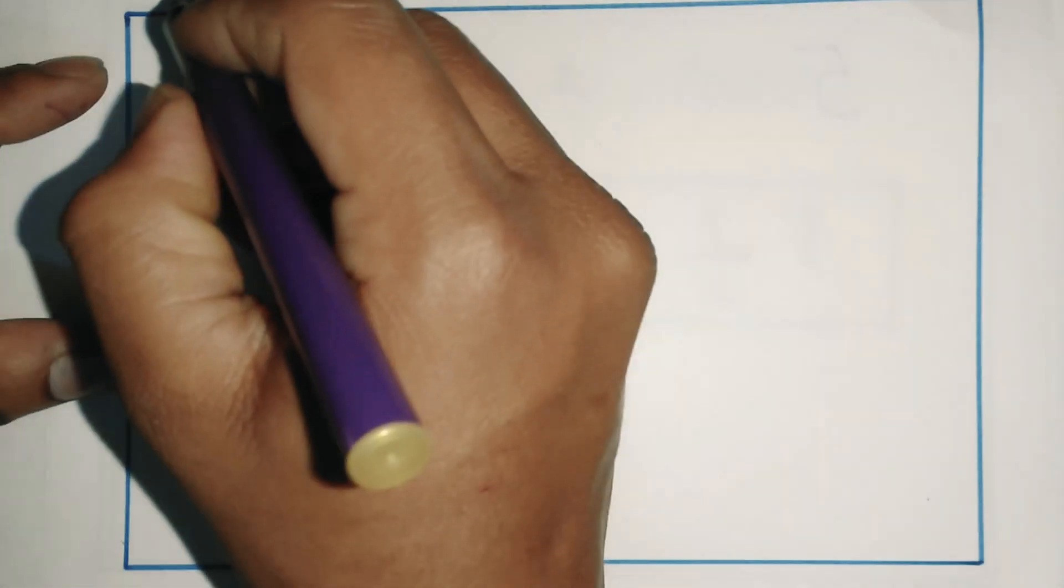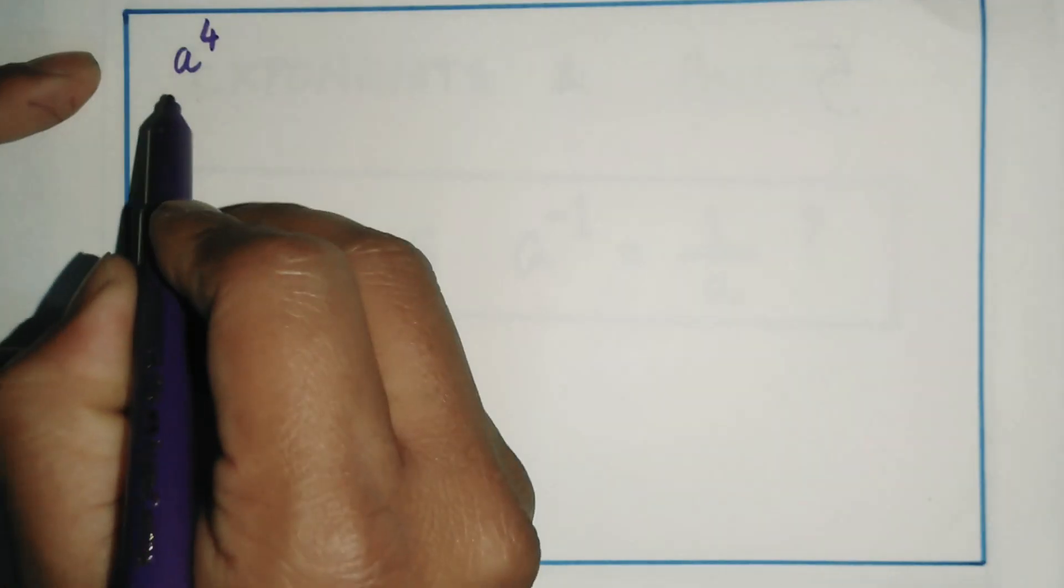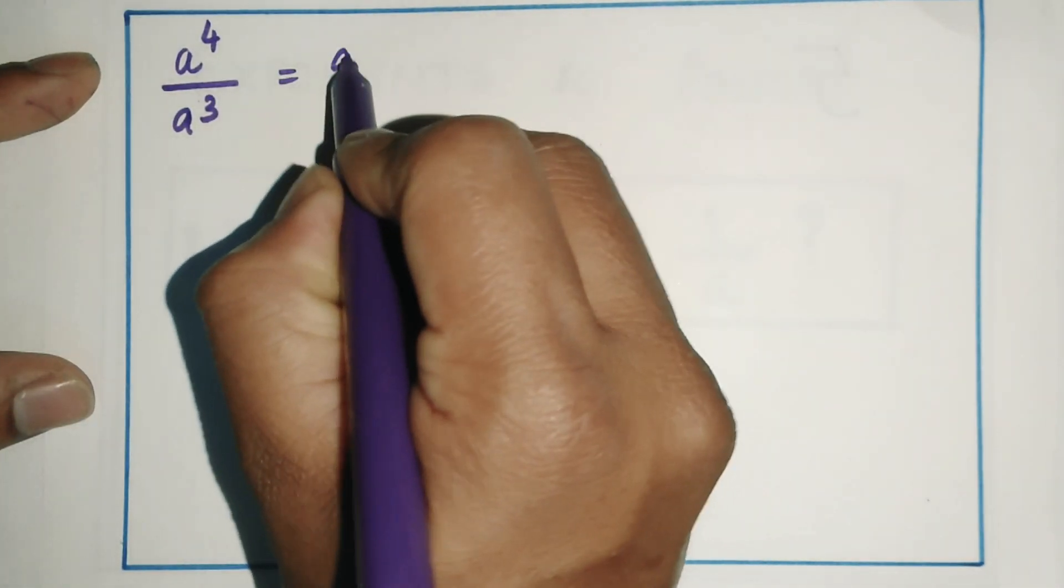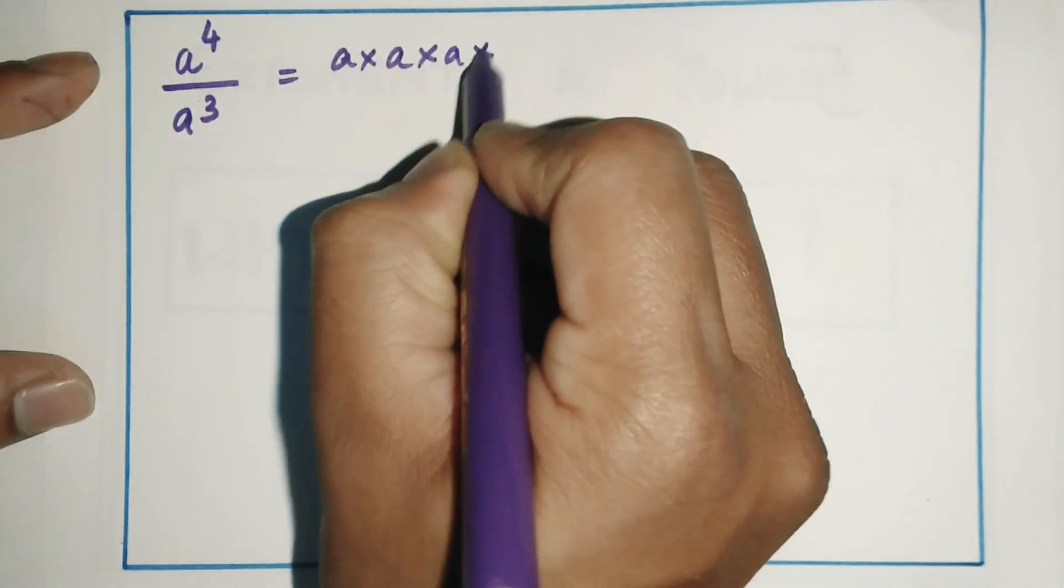Let's consider a^4 upon a^3. I can solve this by expanding the numerator and the denominator.